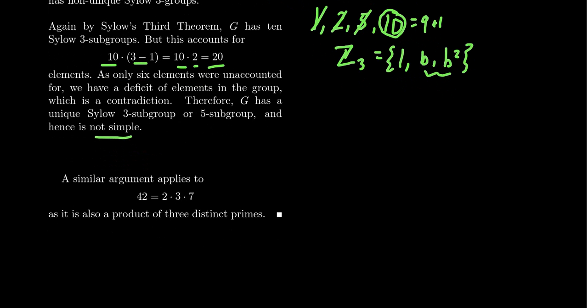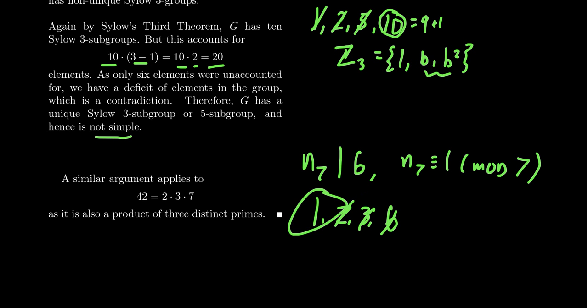I want you to convince yourself that these same arguments could be adapted for the number 42, which is 2 times 3 times 7. The idea in this situation is even better. If you have n_7, this has to divide 6, but also we need that n_7 is congruent to 1 mod 7. So it's actually easier than 30, because divisors of 6 are 1, 2, 3, and 6. The only one that's congruent to 1 mod 7 is 1. So if you're a group of order 42, then you have to have a unique Sylow 7-subgroup.